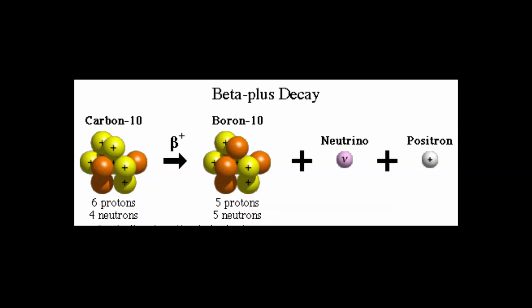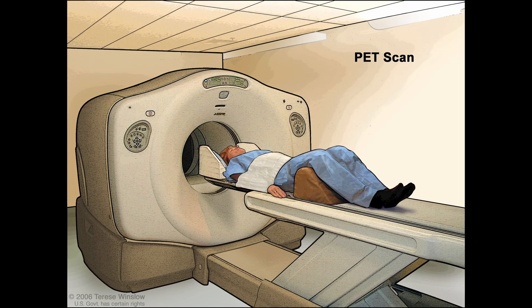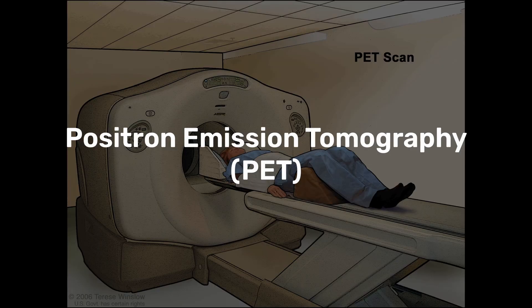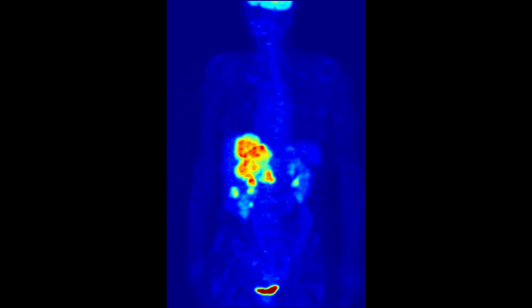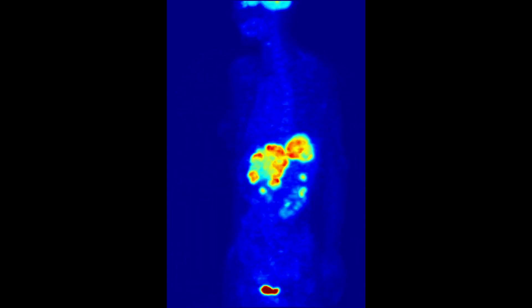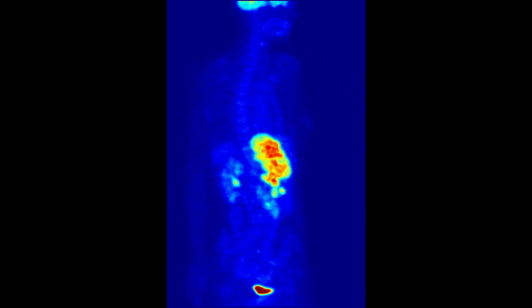In beta plus decay, a positron is emitted, caused by the disintegration of a proton into a neutron, positron, and a neutrino. One modern application of beta particles is PET scanners, which are positron emission tomography machines that use radioactive tracers to image blood flow and other metabolic processes.